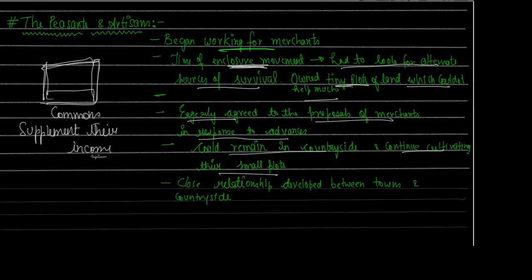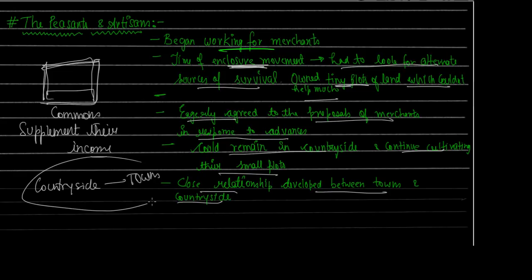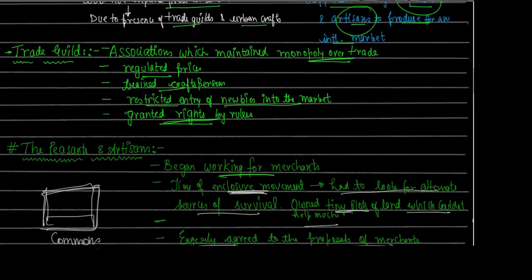An added benefit for the peasants was that they could remain in the countryside and continue cultivating their small plots. They didn't need to leave. This allowed them to supplement their income - both from the merchants' advances and from their own cultivation. Their income improved significantly. After peasants and artisans accepted this arrangement, a very close relationship was established between towns and the countryside through a manufacturing link.